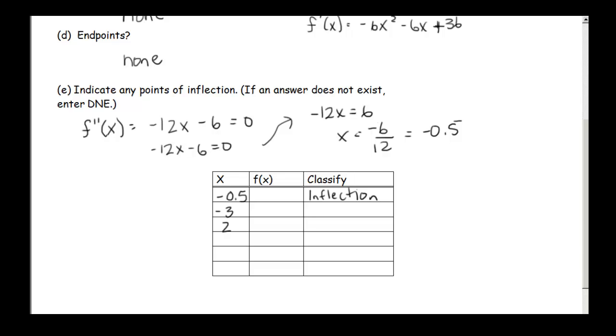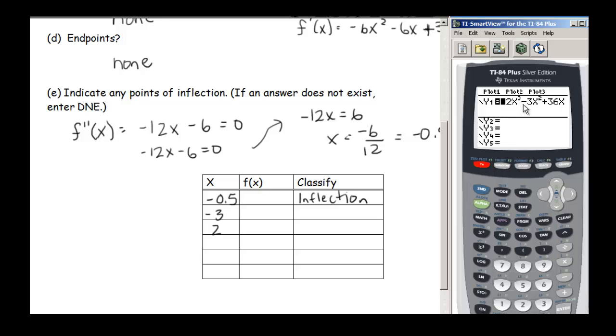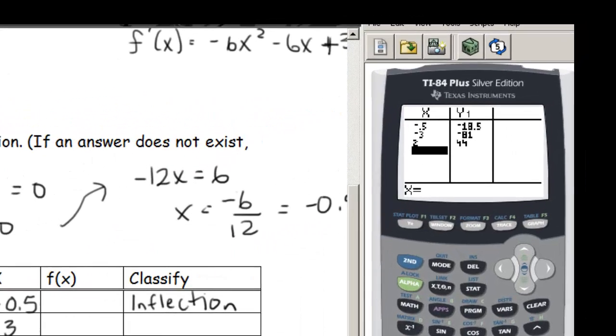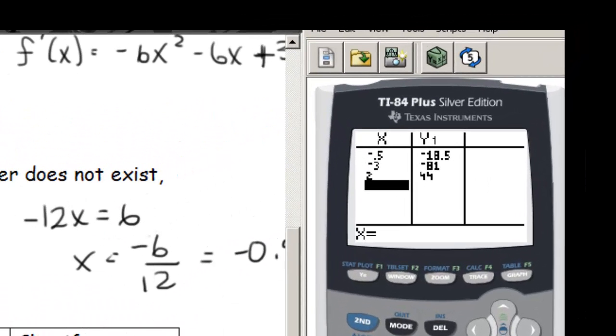So let's grab our calculator here. I have my function in my y1. I first want to go and fill out my table. This is old stuff. I'm going to delete it all. And the points that I want to have in my table are negative 0.5, negative 3, and 2. And our y values here are negative 18.5, negative 81, and 44.